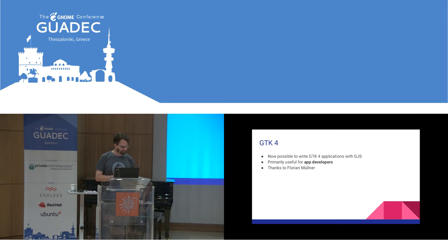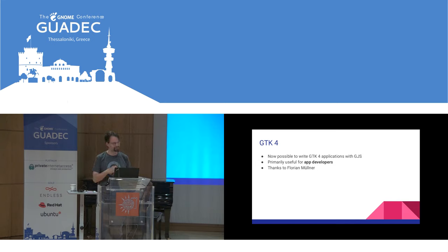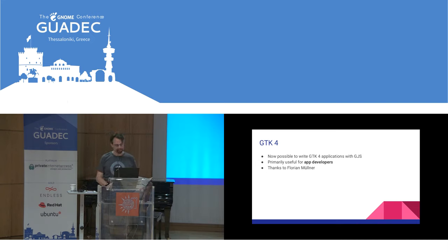Finally on the list of exciting new features, just in time for GNOME 3.34, from Florian, comes the ability to use GTK4 in GJS. Previously that wasn't possible because we loaded GTK3 in the same process, and if you tried to load GTK4 it would blow up. Now no GTK is loaded except for the one your app uses, so you can start porting those GJS apps to use GTK4. And if you really wanted to, you could also port them to use GTK2 — it's also possible now, but don't do that.